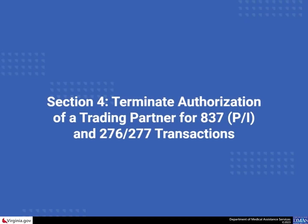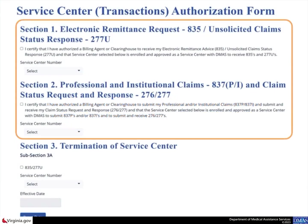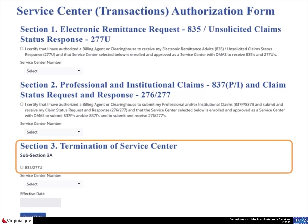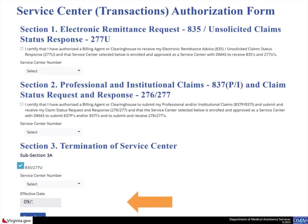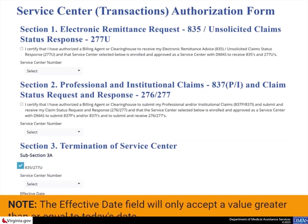This scenario shows how to terminate an authorization of a trading partner for Professional and Institutional Claims, 837P and 837I, and Claim Status Request, 276 and 277 transactions. For this scenario, skip Sections 1 and 2 as they are related to authorizations and this scenario is for terminations. In Section 3, Subsection 3B on the Provider EDI authorization page, select the checkbox for these transaction types. Select an effective date for this change. The effective date field will only accept a value greater than or equal to today's date.